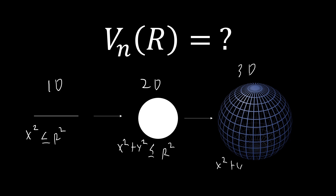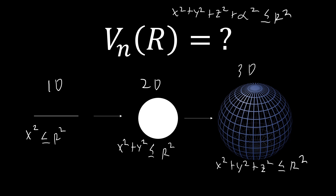And here we have a three-dimensional sphere, which is just a normal sphere. The idea is that we can also generalize this into higher dimensions — a hypersphere — defined by x² + y² + z² + α² ≤ r². What we want to figure out is the formula for the volume of that hypersphere.